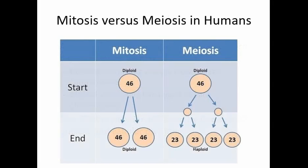In meiosis versus mitosis in humans, mitosis goes from a diploid cell to two new diploid cells that are genetically identical. For humans, that's 46 chromosomes at the start and two cells that have 46 chromosomes at the end. For meiosis, there are two rounds of cellular and nuclear division, so it goes from a typical human body cell with 46 chromosomes through two rounds of division to four cells at the end that are haploid — only 23 chromosomes each.